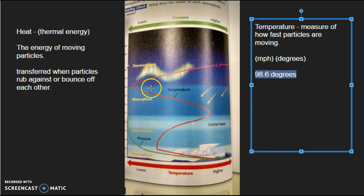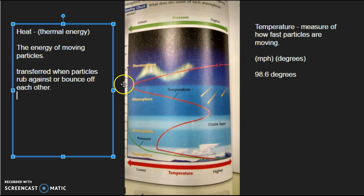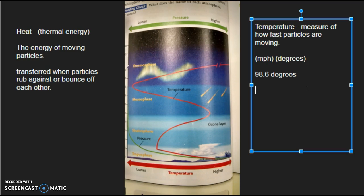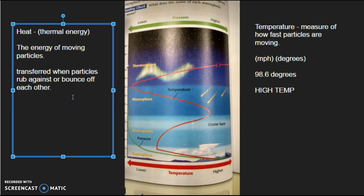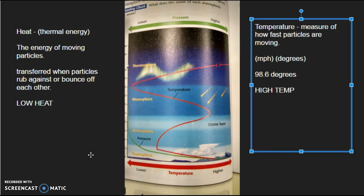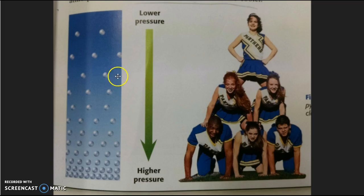So what does that have to do with the thermosphere? Well, the thermosphere has high temperature, but it has low heat. And this video is trying to explain why. And here's the explanation. The thermosphere has high temperature, but low heat because there are so few particles.